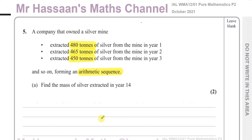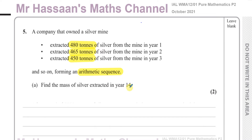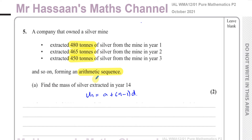They're asking us to find the mass of silver extracted in year 14. This is an arithmetic sequence and they're asking for the mass in a particular year — so we're looking for a particular term, not a sum of terms. We're going to be using the formula u_n = a + (n − 1)d.